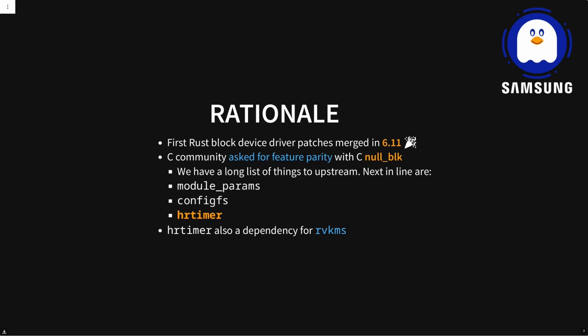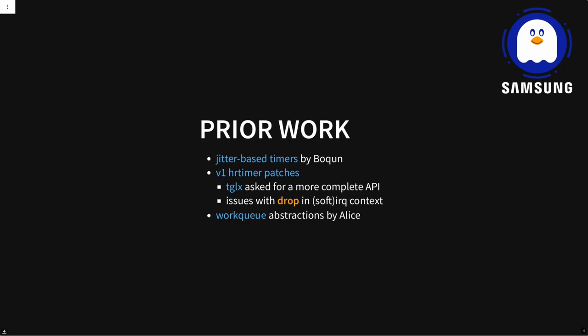Right now we have module parameters, and next up we're going to build configFS abstractions. As far as I'm aware, the HR timers are also a dependency for the Rust implementation of the virtual kernel mode setting, which is some GPU thing. So it's good — there are more things that can use this work.